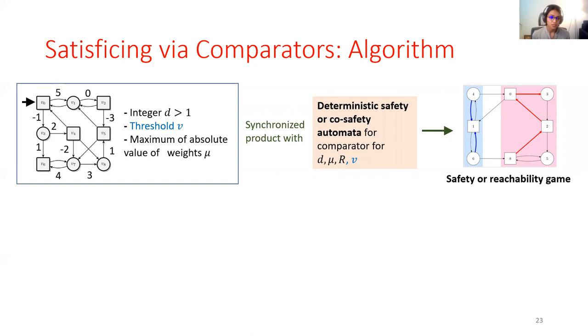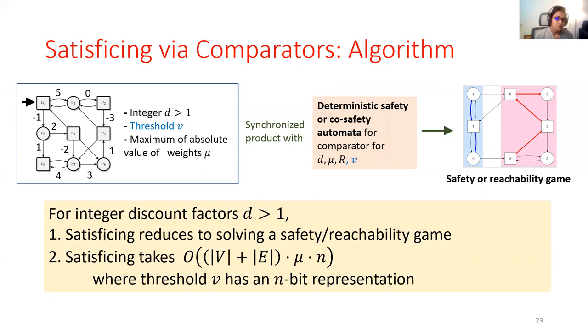So the same scheme works again. The same pipeline works, except that now it also works for arbitrary rational numbers for the threshold value. And therefore, what we've been able to show is that when the discount factor is an integer, satisficing reduces to solving either a safety or reachability game.